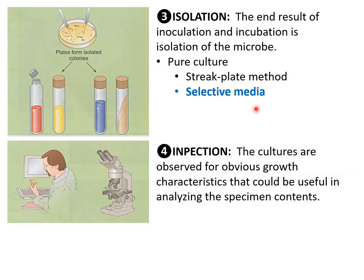Once we have inoculated, incubated, and isolated, the next I is going to be inspection. We're going to look and see what we've done — looking for different growth characteristics. For example, Staphylococcus aureus always forms these yellow golden colonies. Klebsiella pneumoniae always forms these white shiny colonies because they have a capsule. Using different medias, sometimes there's a color change, which is more of a biochemical reaction, but first we're going to look at it — inspection.